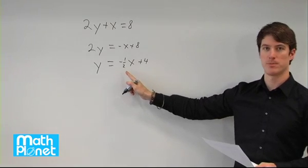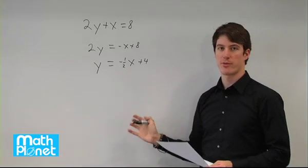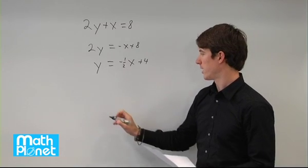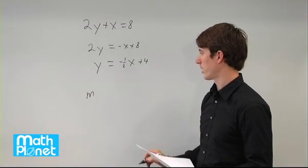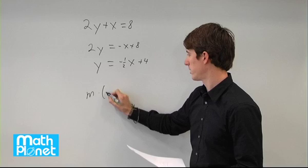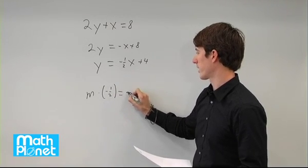So our slope here is negative one-half. What we need to do to find the slope of the new line is we say m, slope of the new line, times this slope, negative one-half. That has to equal negative 1.